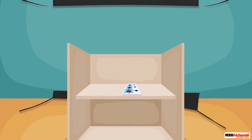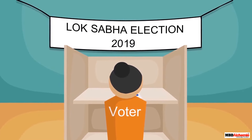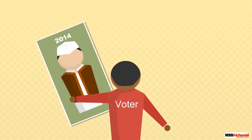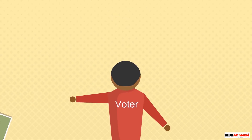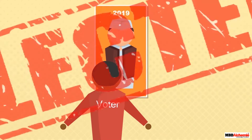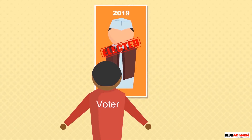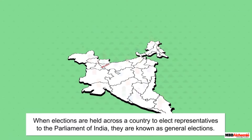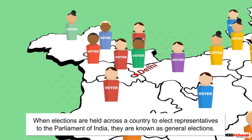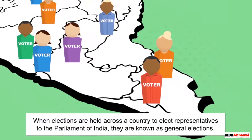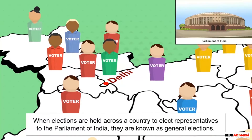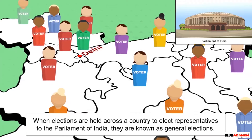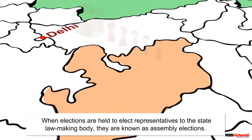Elections are held at regular intervals to select representatives of the people. Through elections, people can also reject the representatives who had been chosen in the previous election if they are not satisfied with their performance. When elections are held across a country to elect representatives to the national lawmaking body, that is the parliament, they are known as general elections.